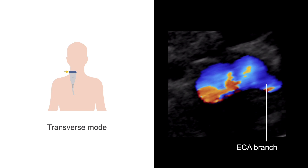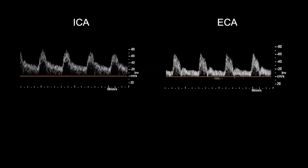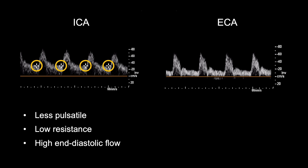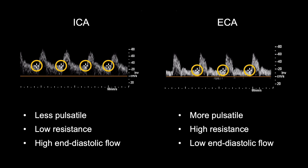You may also be able to see the ECA branches in the longitudinal plane. The ICA and ECA also have different flow patterns, which can be identified using the pulse Doppler. The ICA is less pulsatile and has a lower resistance waveform, which means it has higher end diastolic flow.